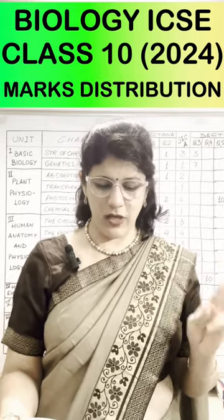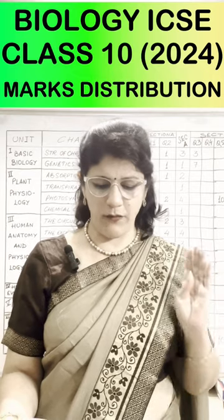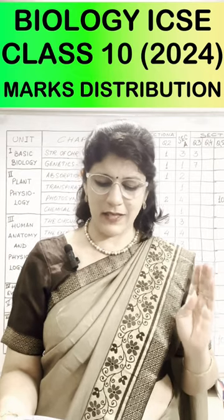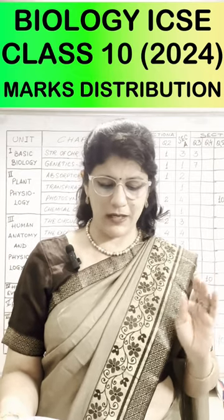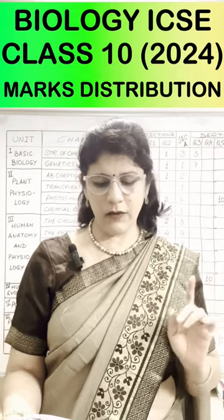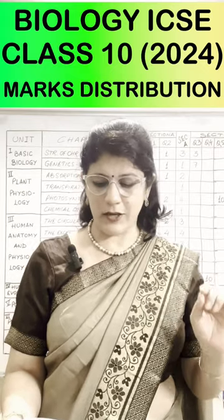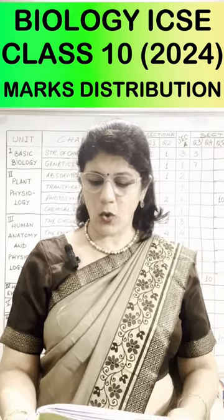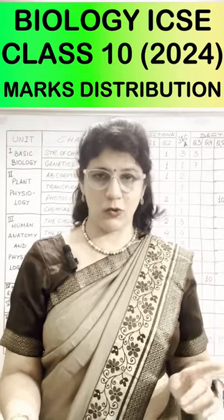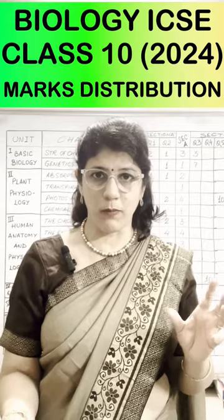Unit 3 Human Anatomy: Circulatory 3 marks, Excretory 4 marks, Nervous System 3 marks, Sense Organs 8 marks, Endocrine 4 marks, Reproductive 3 marks in Section A, and 19 marks in Section B — total 44 marks.